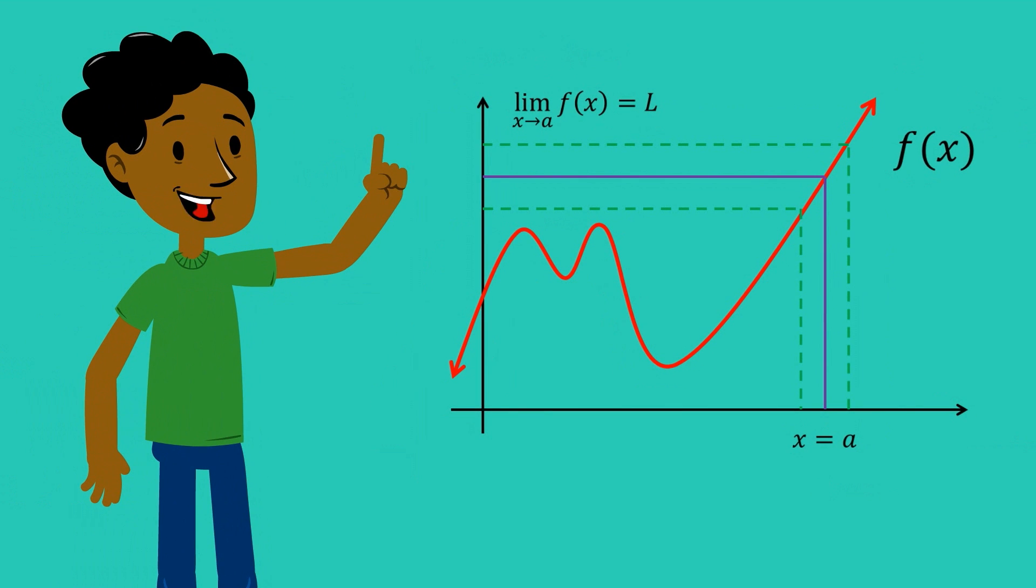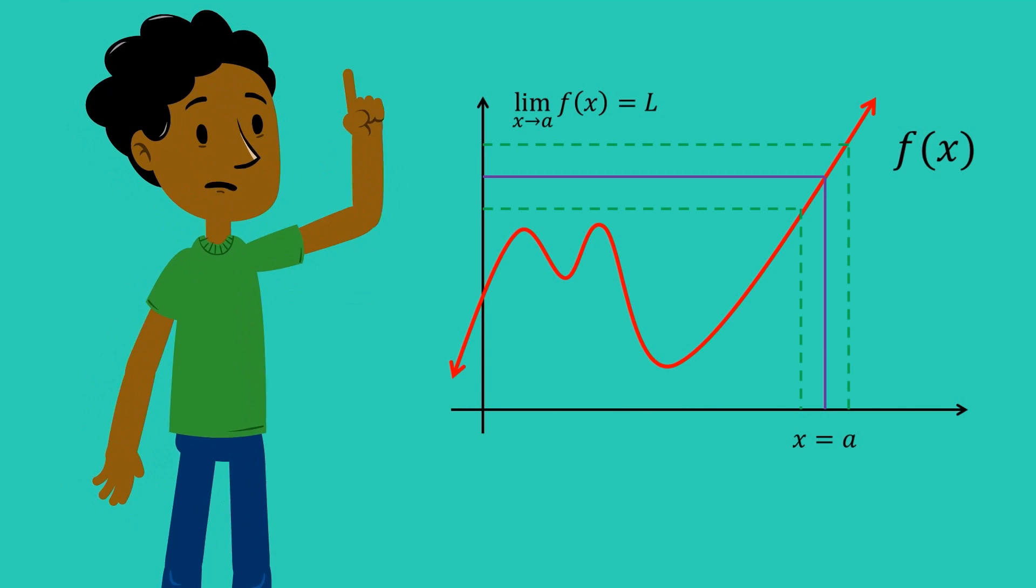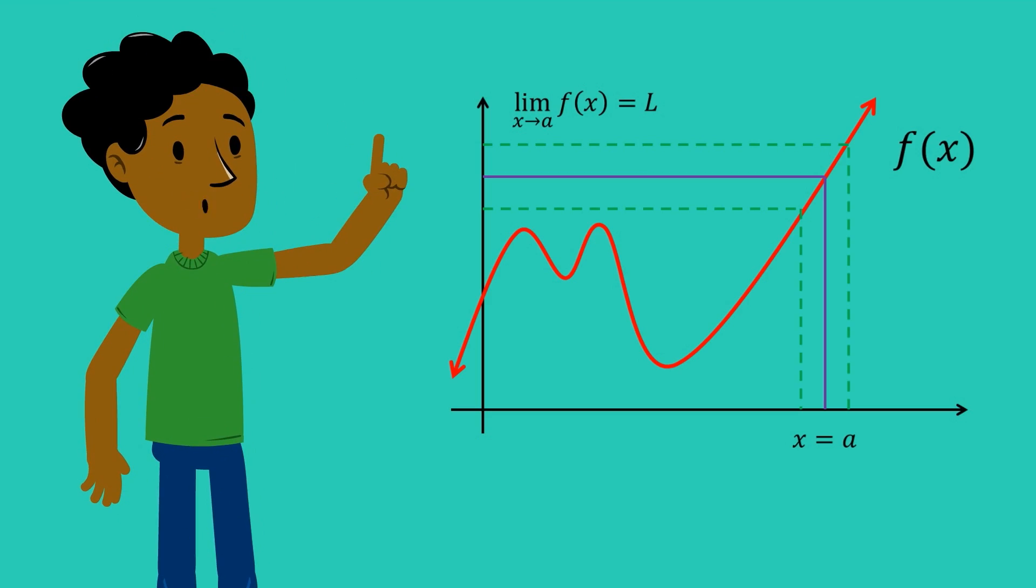In a general sense, limits allow us to determine what value a function is approaching when we use a particular input. Not necessarily what the function gives us as an output, but rather what value it's getting arbitrarily close to.